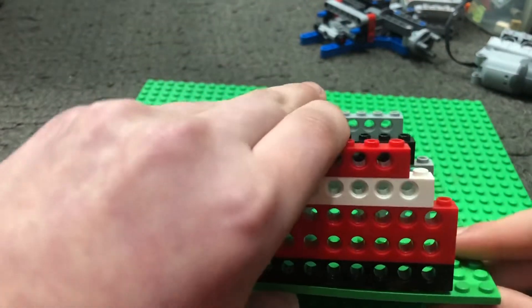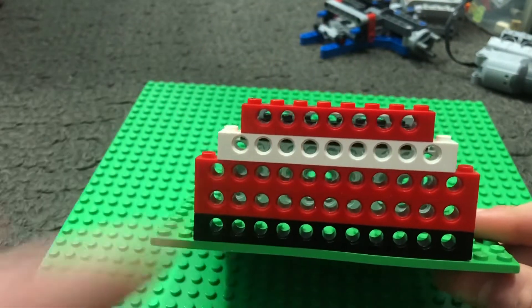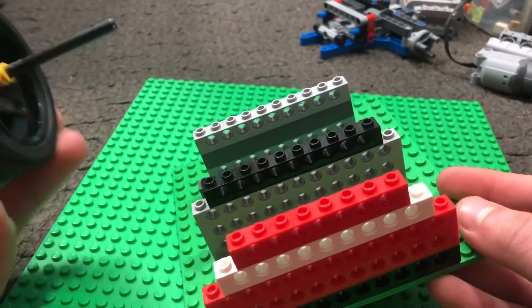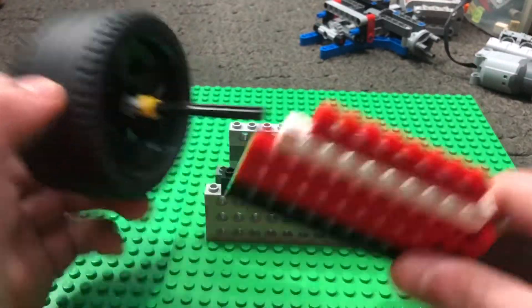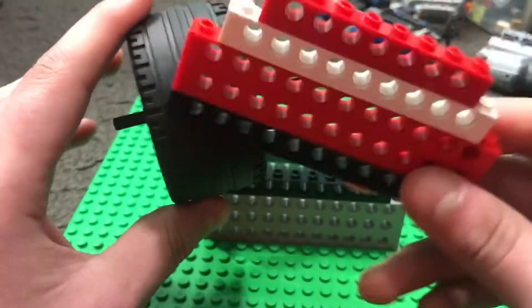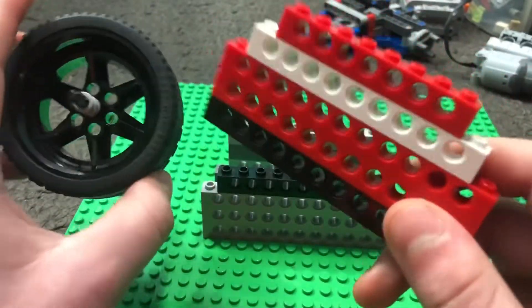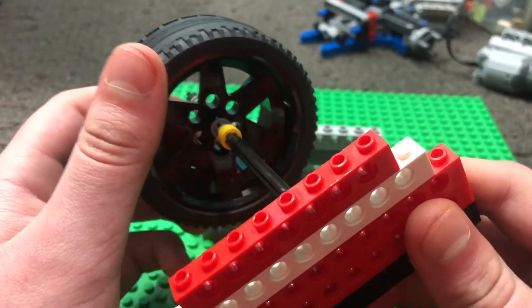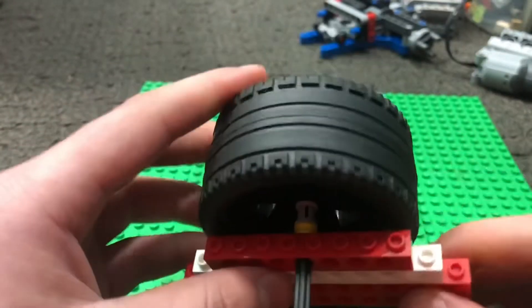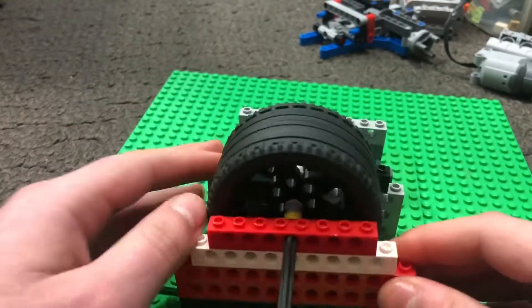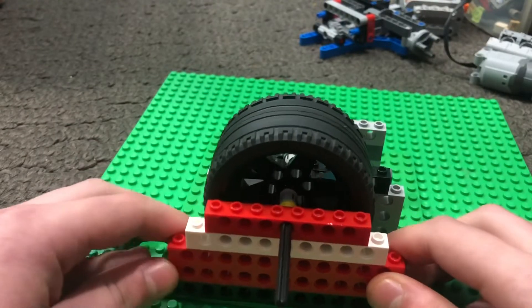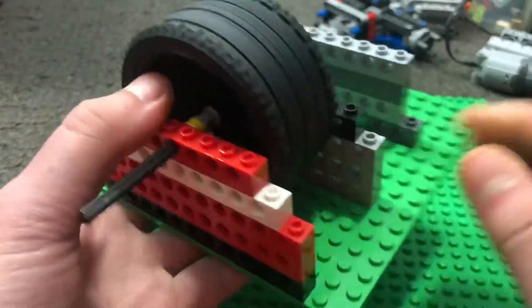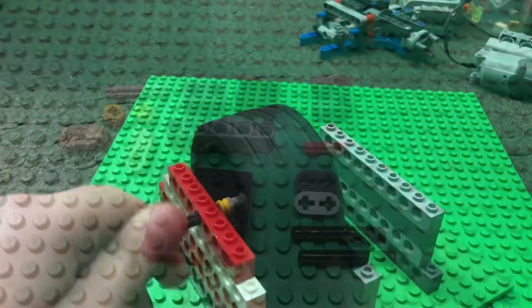Moving along we have the flywheel, which is just a simple wheel with a long axle through it and a couple of bushings to keep it in place. This will go right through the middle hole on here and then you can just stick it on like that.